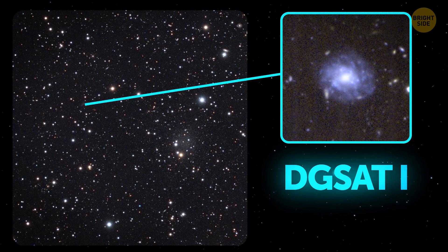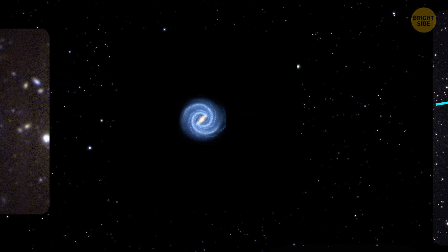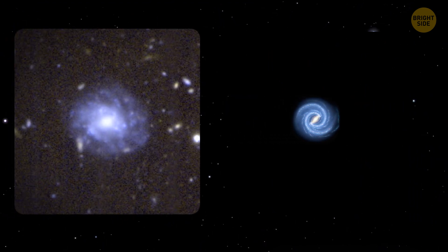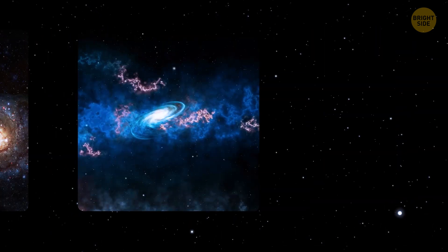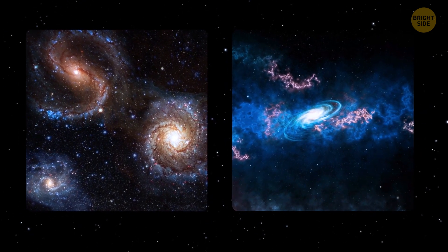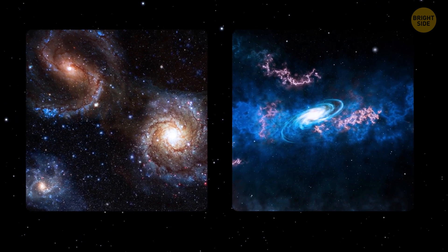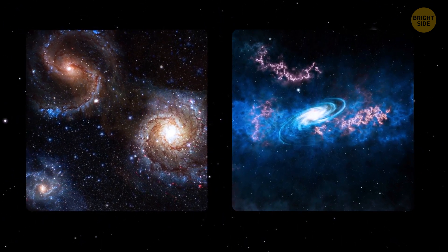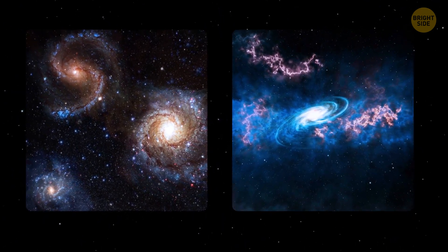Meet DGSAT I, a living fossil galaxy. It's as big as the Milky Way, but is nearly invisible because its stars are spread out incredibly thinly. But what makes the galaxy so unique is that it's sitting all alone, unlike other galaxies of this kind, which are usually found in clusters.